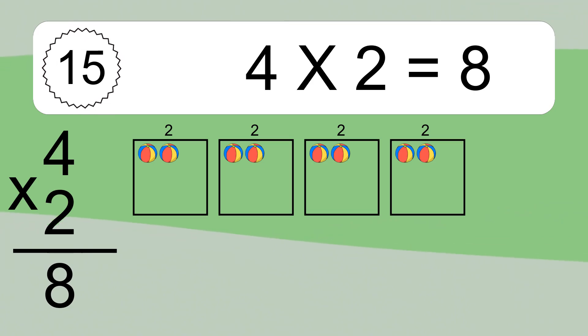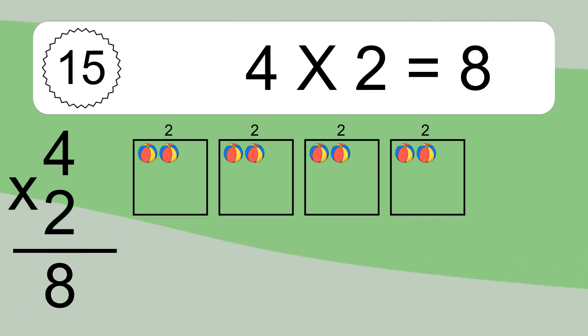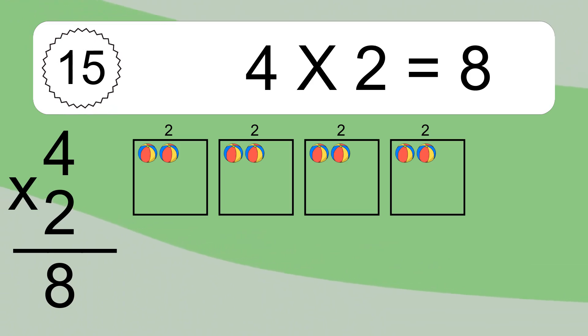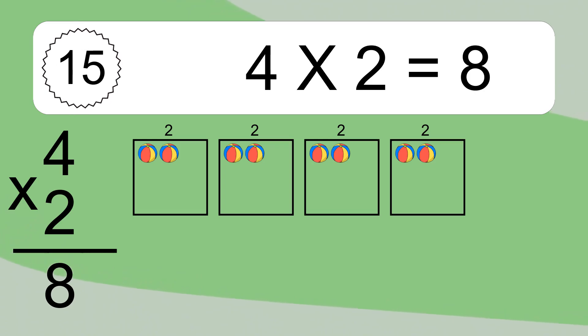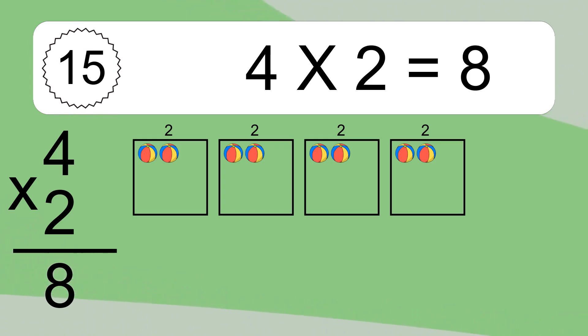4 times 2 equals what? We have 4 boxes, and each box has 2 colorful balls inside. If you count all the balls in all the boxes together, you will have 4 times 2 balls. This equals 8 balls.